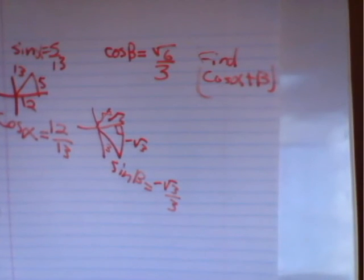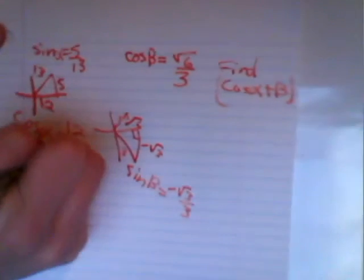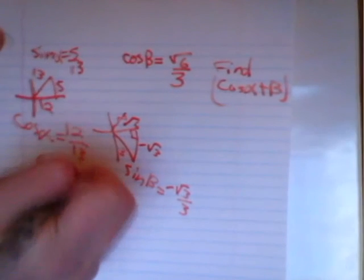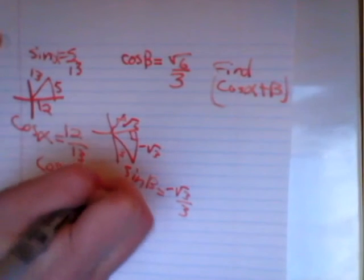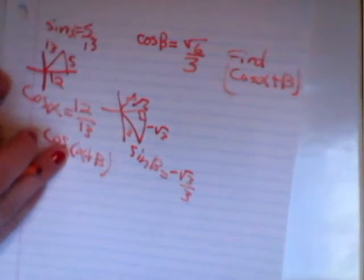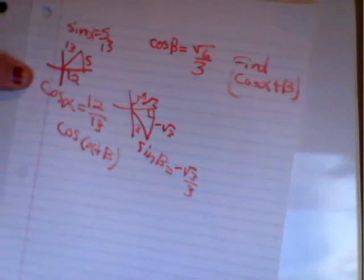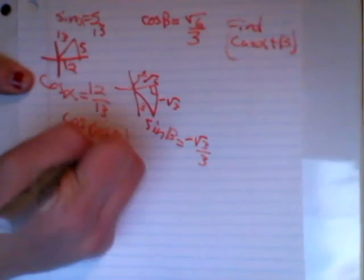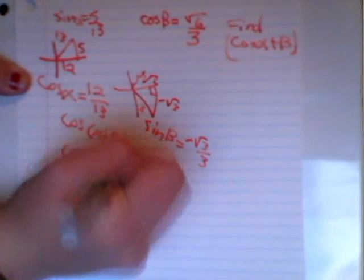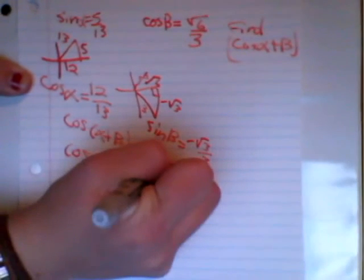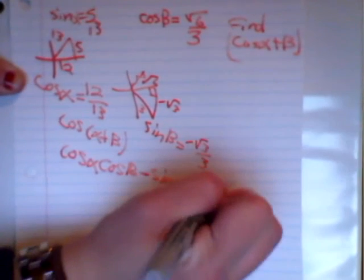So we have cosine of alpha plus beta. And since this is a cosine, the pattern is cosine, cosine, sine, sine, change the sign. So cosine alpha, cosine beta minus sine alpha, sine beta.